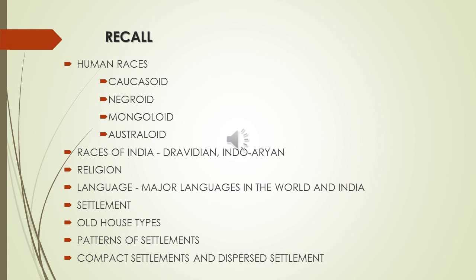Then religion — the major religions of the world: Hindu, Christianity, Muslim, Shinto, Buddhism, and Jainism. Then languages — language is the main factor for communication. We communicate with other people mainly through language. We discussed the major languages in the world and also in India. In India, there are 22 officially recognized languages.